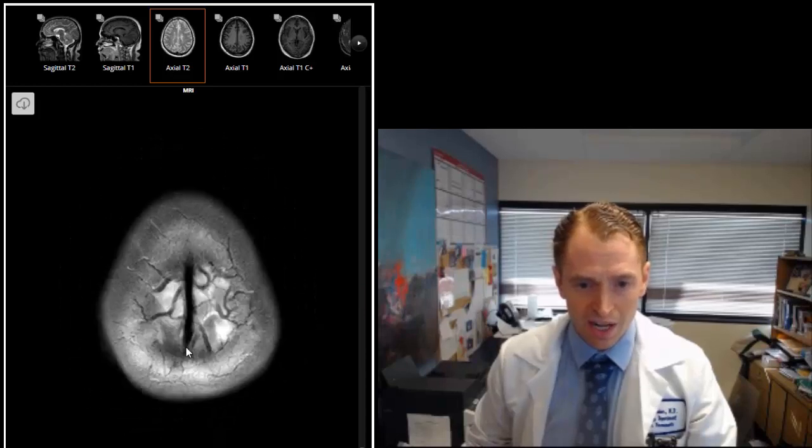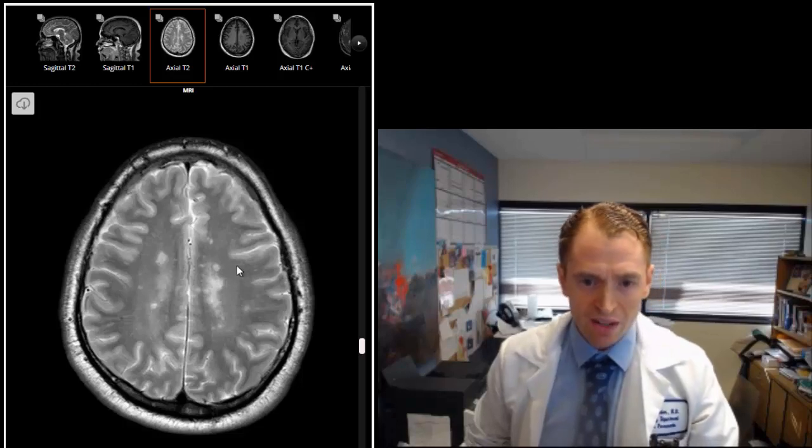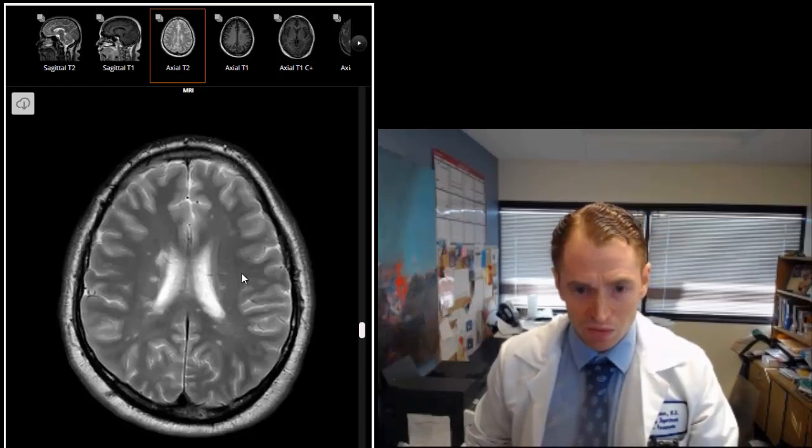This is the superior sagittal sinus, one of the major veins in the brain. And you can see these white matter lesions which are highly consistent with multiple sclerosis.